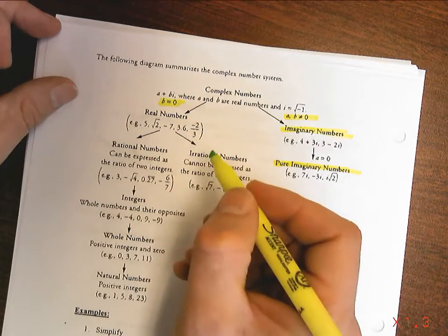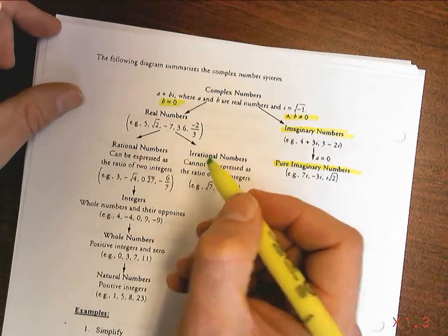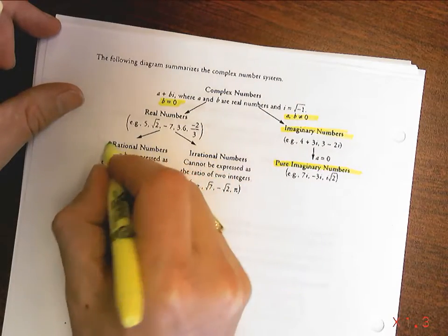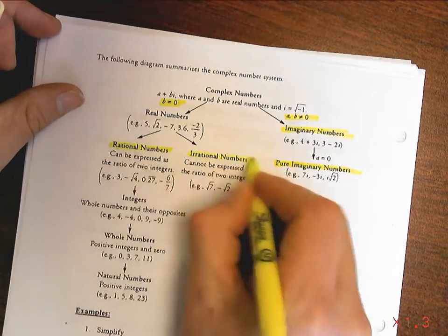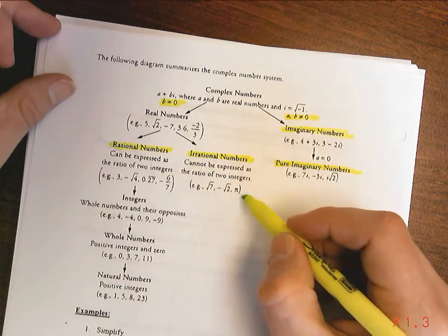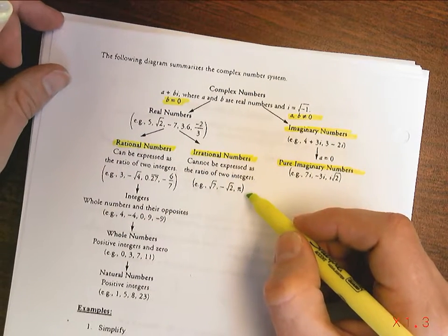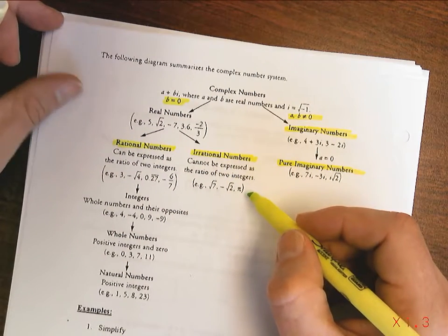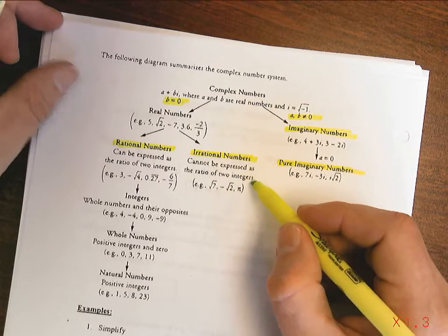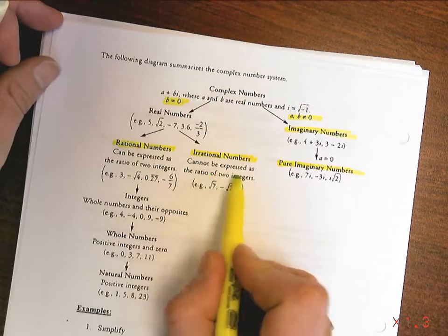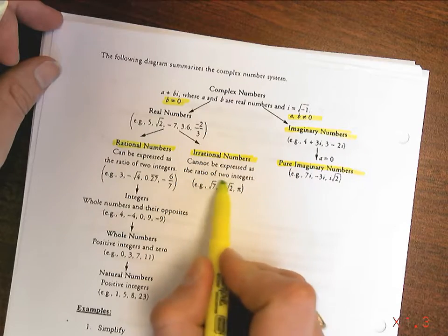Now real numbers is made from the union, remember, between the rational numbers and the irrational numbers. Irrational numbers cannot be represented as a fraction, where a over b and b cannot equal zero, and a and b are both from the integers. So a nice way to say that, cannot be expressed as the ratio of two integers.